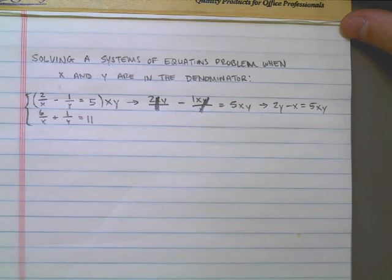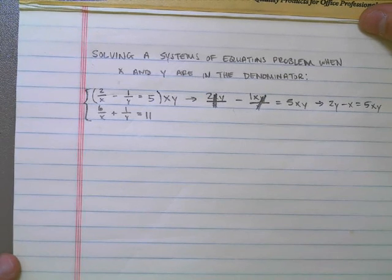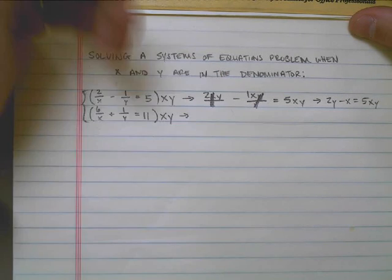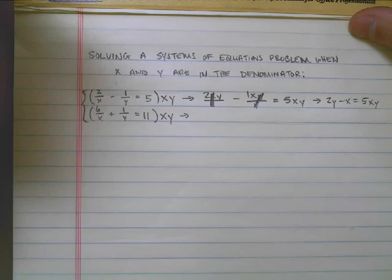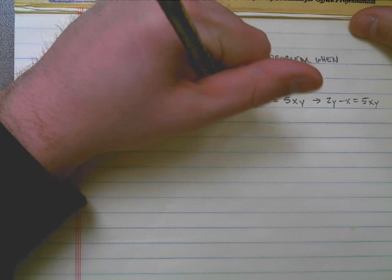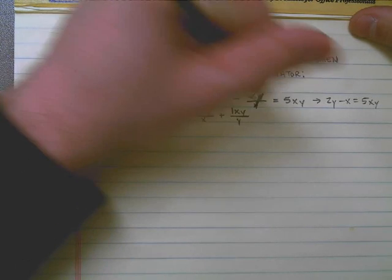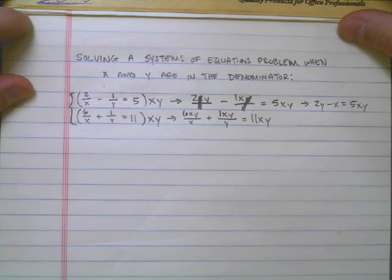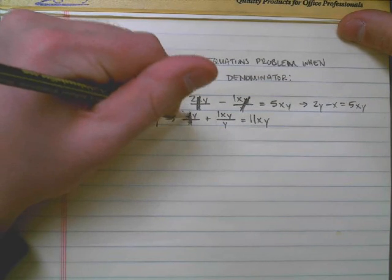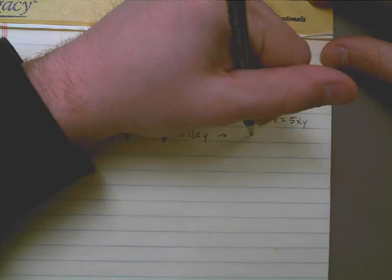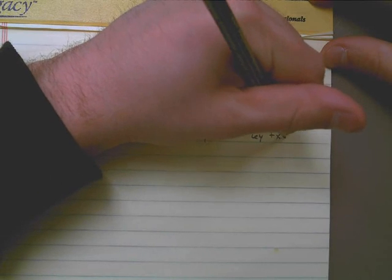The same way, let's do the same thing over here. Our second equation, we have x and y on the bottom, so the common denominator is still xy. If we multiply every single term by xy, that means we get 6xy over x plus 1xy over y, and that's going to equal 11xy. Now, we notice once again, the x's cancel out, the y's cancel out, and we're left with the equation 6y plus x is equal to 11xy.